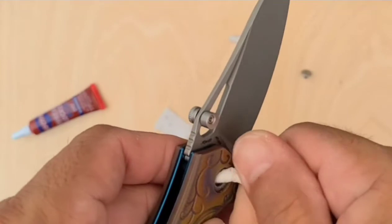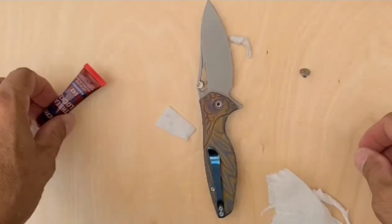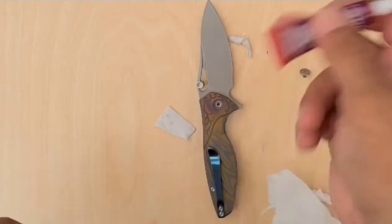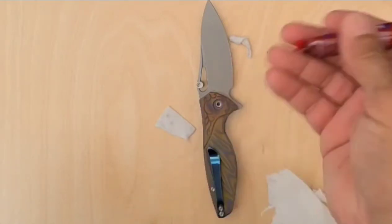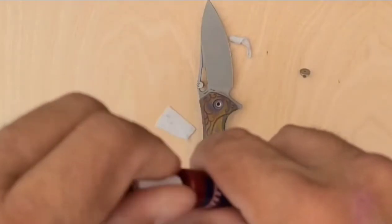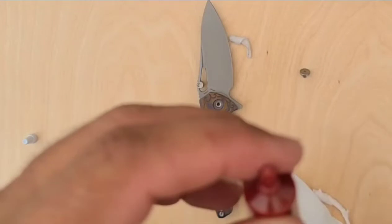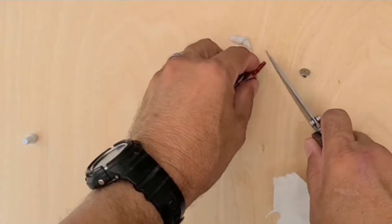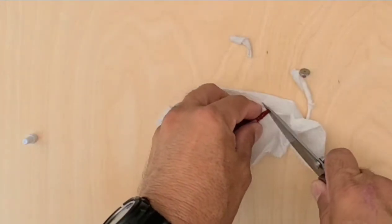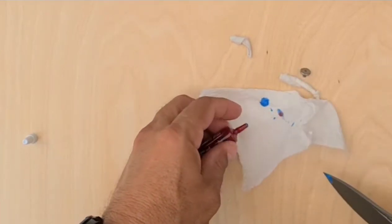All right. So how much Loctite are we going to use? Not a lot. We're not going to go crazy with it. Okay. Don't need a lot. Shake it up. It has little particles in suspension in this Loctite. So we've got to shake it up. You might, if it's a brand new tube like this, you'll actually have to cut the end off. Okay. See, there's the blue blood coming out.